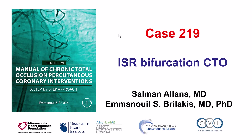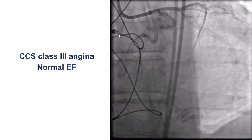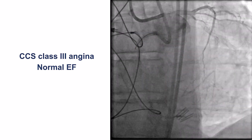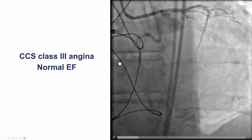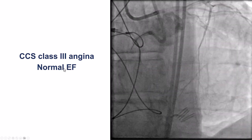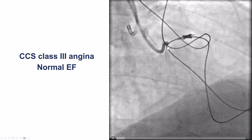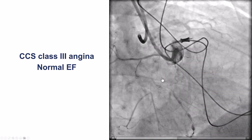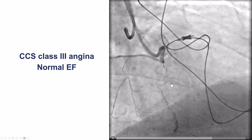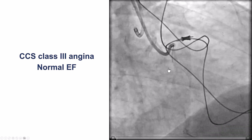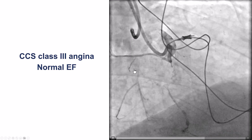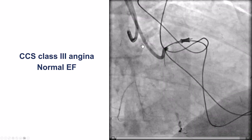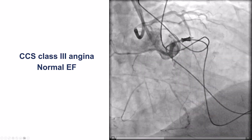It was a case of an in-stent CTO that involved a bifurcation. The patient had previous coronary bypass, but his grafts were occluded except for the patent LIMA. He presented with significant angina and was found to have normal ejection fraction. This is the RAO view. There is a CTO of the right coronary artery with an ambiguous proximal cap. There are some bridging collaterals, diffusely diseased distal vessel, and there is also a circumflex CTO within a previously placed stent.